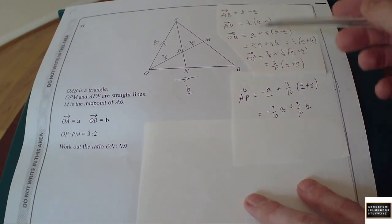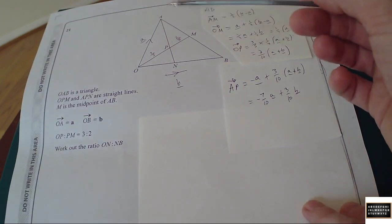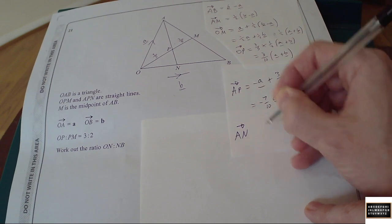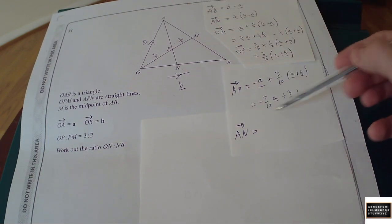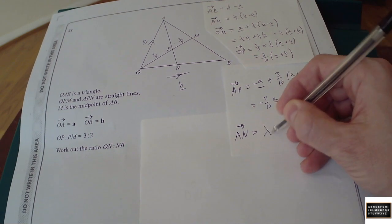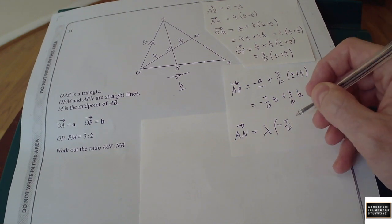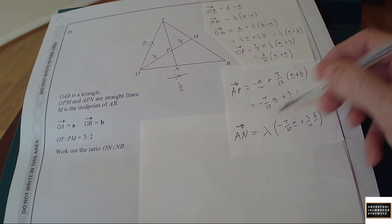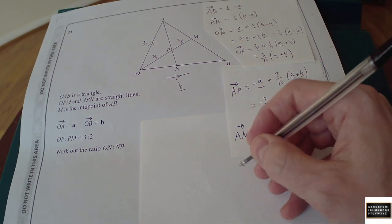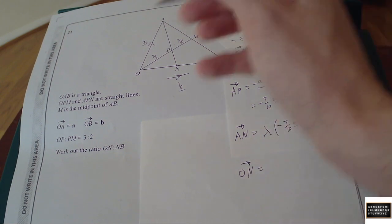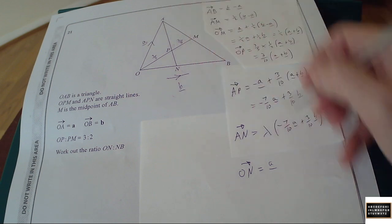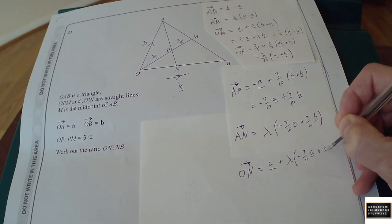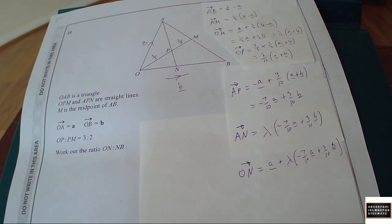That's as many vectors as you can write down in one go. Remember, we need to get A to N. A to N is where it gets a little bit more tricky — A to N is going to be some multiple of A to P; I don't know what, so I'll give that a letter: lambda. It's some multiple of the vector (minus seven-tenths a plus three-tenths b). Vector ON will then be a plus lambda times (minus seven-tenths a plus three-tenths b).